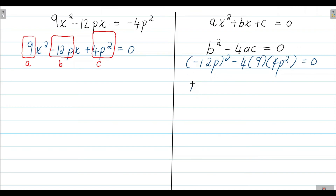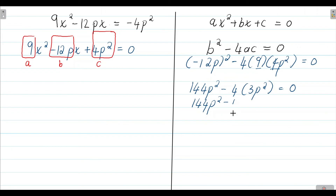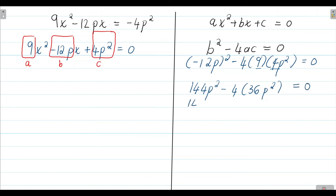Substituting into b squared minus 4ac: negative 12p squared gives 144p², minus 4 times 9 times 4p² gives 144p². So the discriminant equals 144p² minus 144p², which equals zero. This simplifies to zero equals zero.